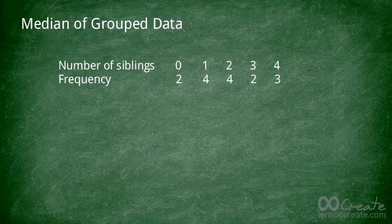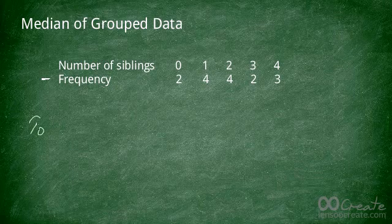Now let's learn how to find the median of grouped data. The following table represents an example: students in a class were asked how many siblings they have. Some have 0, some 1, some 2, some 3, and some even 4. The number of students for each value is given as the frequency. The question is: find the median number of siblings for the group.